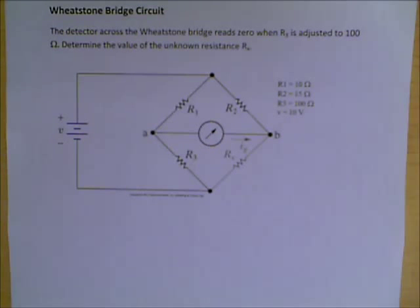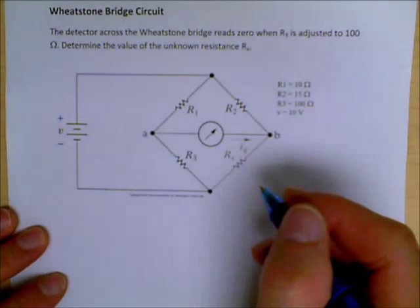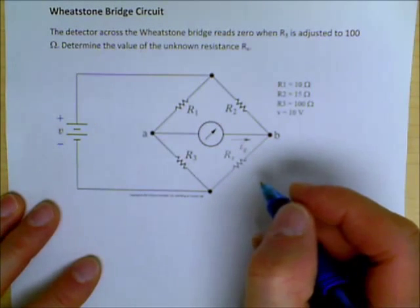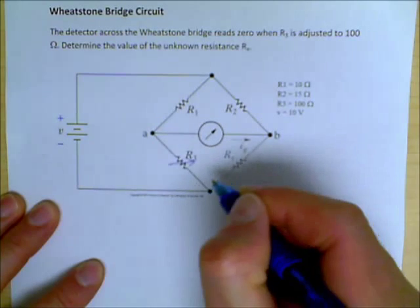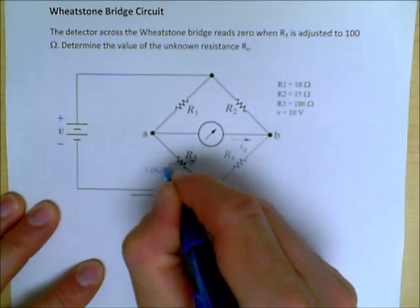Alright, this is the second installment in the Wheatstone Bridge series. We have suggested that we have adjusted R3, which is a variable resistor, to 100 ohms.